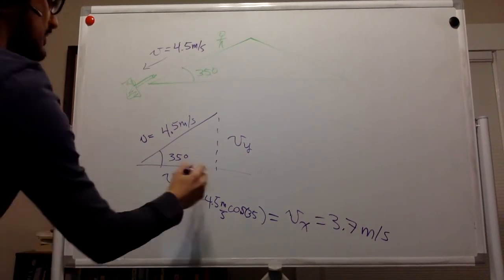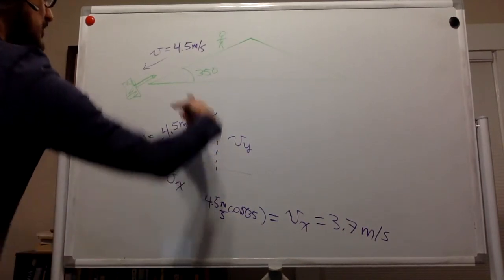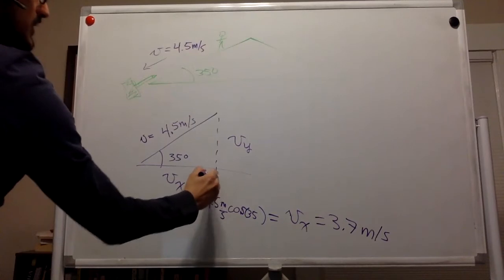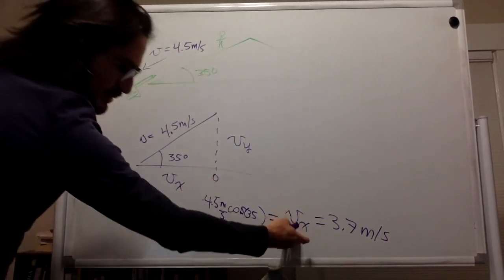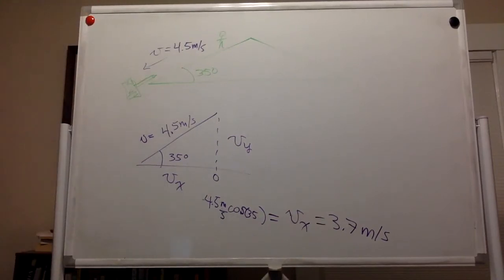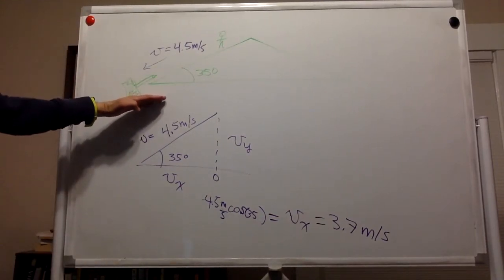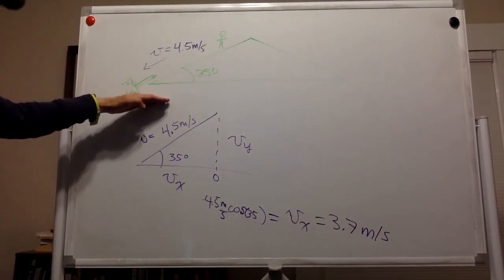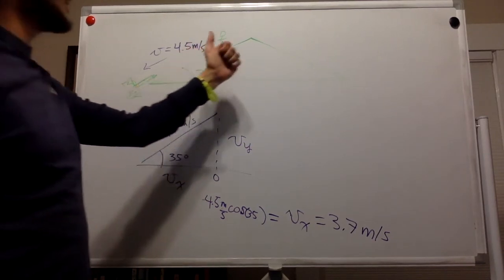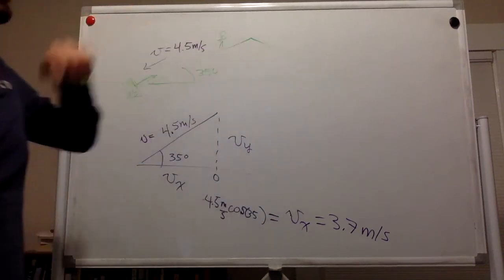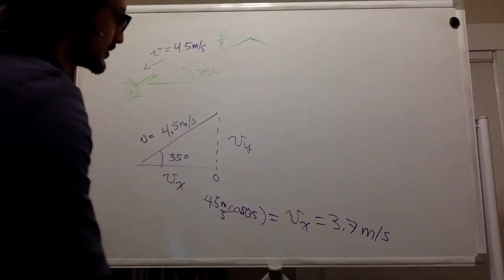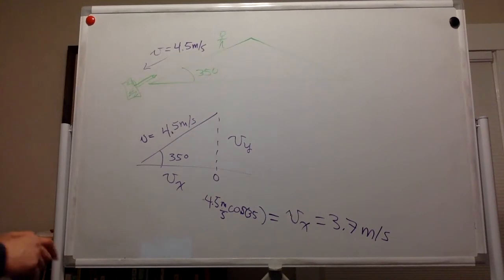Actually, if you think about it, this is moving in the negative direction. The origin is here. So this velocity is really negative 3.7. But the problem doesn't tell us whether it was sliding down to the left or to the right or north or south. So let's just assume that it's 3.7.